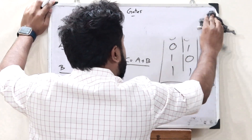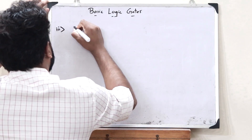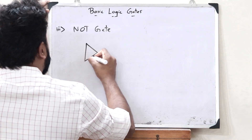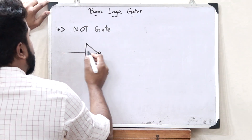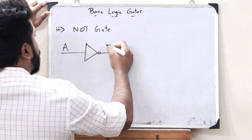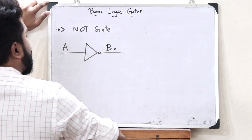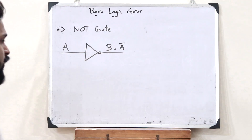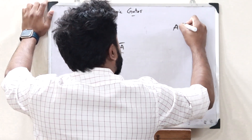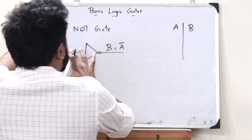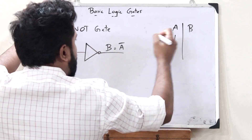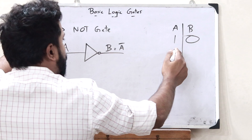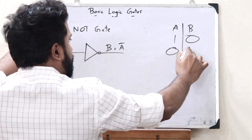Next we have the NOT gate. The NOT gate is very simple — it's basically an inverter. A NOT gate is represented like this — it will have one input A and one output B, and this B is nothing but the invert or complement of the input. If input A is 1, then output B is equal to 0. And if input A is 0, then output B is 1. This is the truth table of the NOT gate.